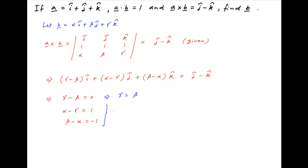The first equation implies that gamma is equal to beta and the second equation implies that alpha is equal to gamma plus 1.